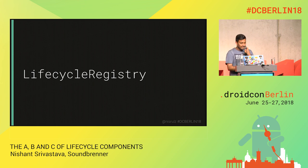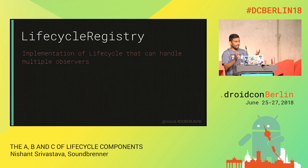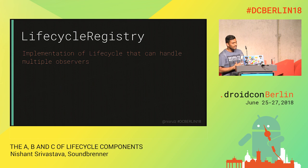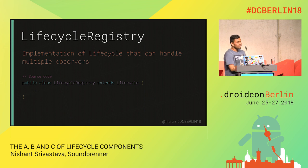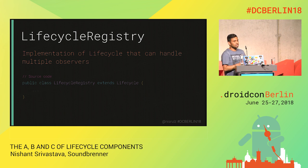This is what the source code looks like. You have a LifecycleRegistry which extends Lifecycle. If you remember, Lifecycle has just one method — getLifecycle. So by extending it, you have access to that too.